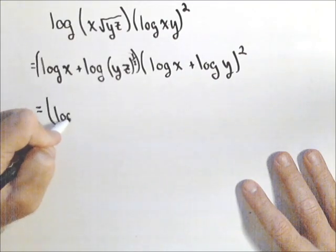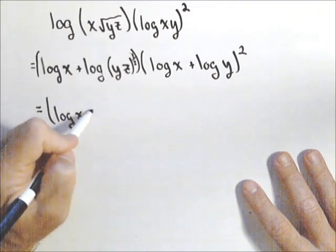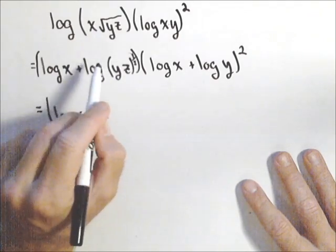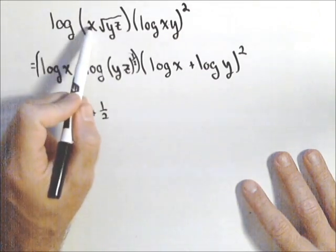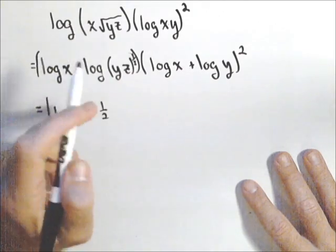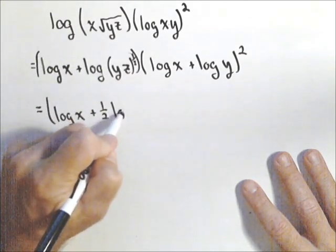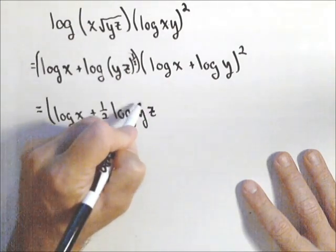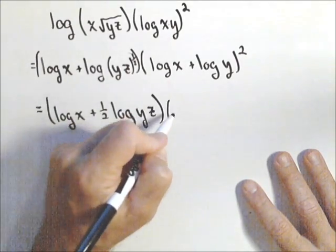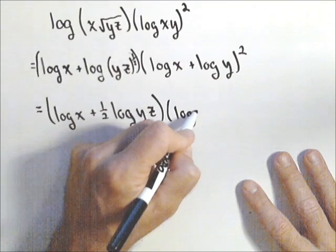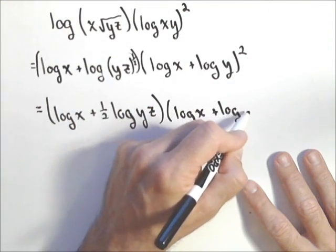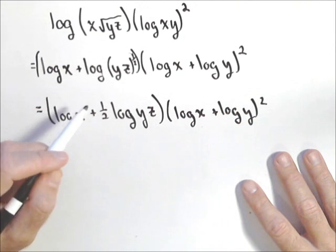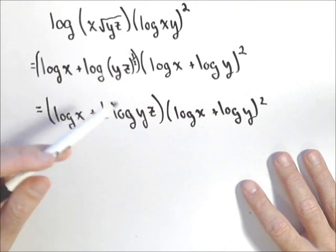So over here, I've got this log of x, plus one-half. Both of them were under the radical, so I can pull that square root out front. Up here, I couldn't, because x was not raised to the one-half. Log of yz, which will still need to be expanded. We'll do that in the next step. Times log of x, plus log of y. We'll use the same values we had before. That was that log of x was two, log of y was three, and log of z was five.